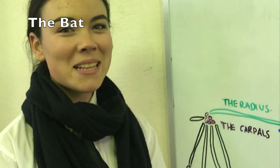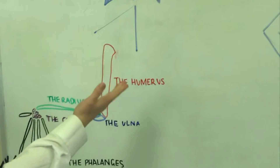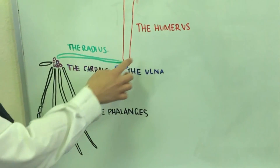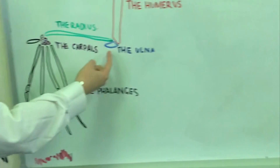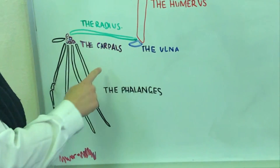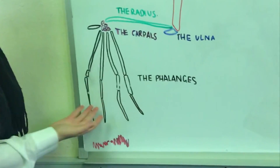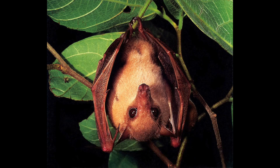The pentadactyl limb of the bat includes the humerus, the radius, the ulna, which is very small, the carpals, and the phalanges. And this is all elongated.